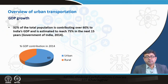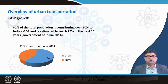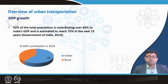Urban areas are driving the economy — people are migrating to urban places because there are jobs and employment which are otherwise not available in rural areas. Although the urban population is currently only 32 percent of the total population in India, it contributes over 60 percent to India's GDP. India's GDP is very much dependent upon the urban areas and the jobs that are there.